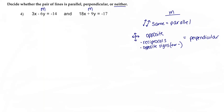So let's go ahead and find the slope for these two equations. Let's take a look at the first equation: 3x minus 6y equals negative 14. This is in standard form. Standard form is really good for finding your x and y intercepts, but because we're not doing anything with intercepts here, it's useless to us.